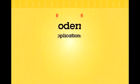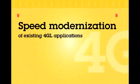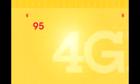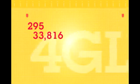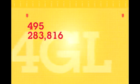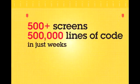Informix Genaro software can also speed modernization of existing 4GL applications. It's not uncommon to transform 4GL applications with a few hundred programs, more than 500 screens, and 500,000 lines of code in just weeks, depending on the desired level of enhancements.